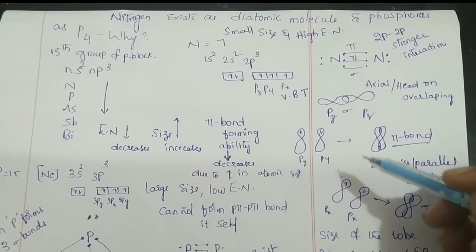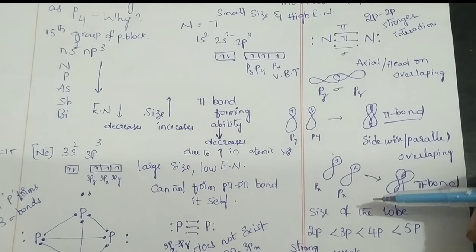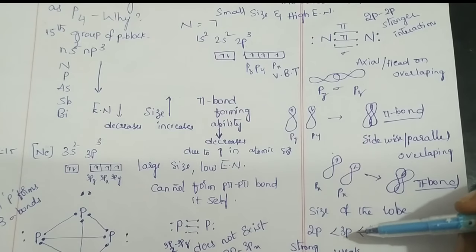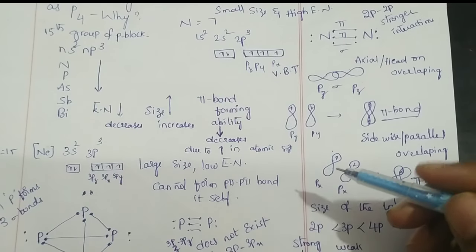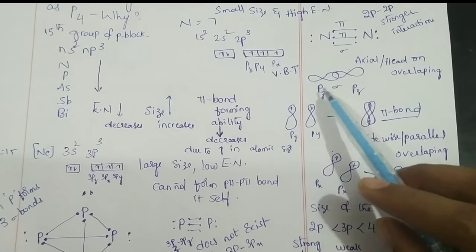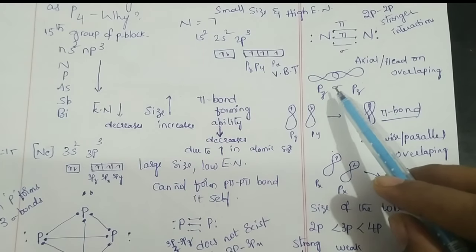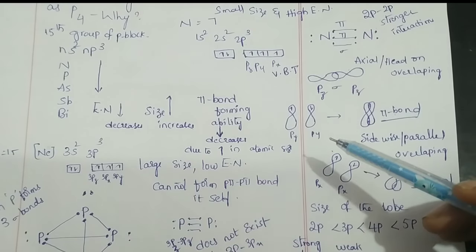The size of the 2p lobe is small. Compared with 2p, the 3p lobe is large. Compared with 3p, 4p is large. Compared with 4p, 5p is large. Due to the small size of the 2p lobe, 2p-2p overlap is stronger overlap, so it forms a strong bond.